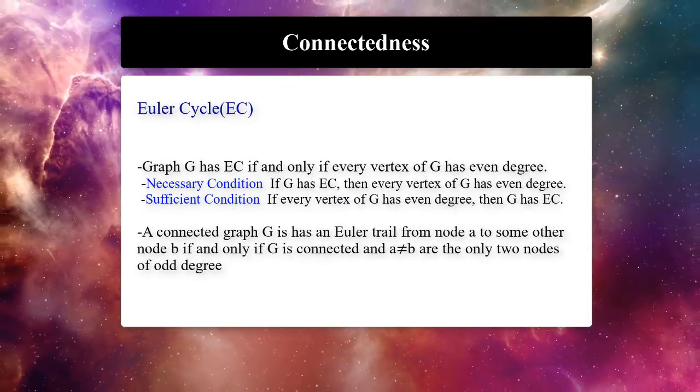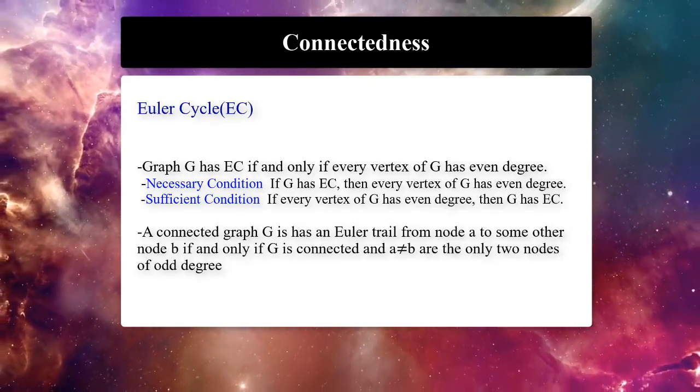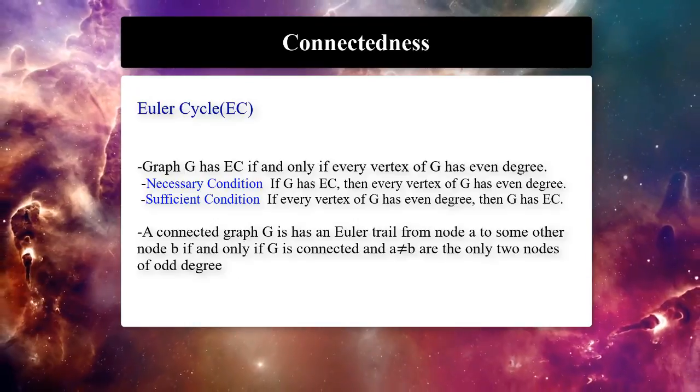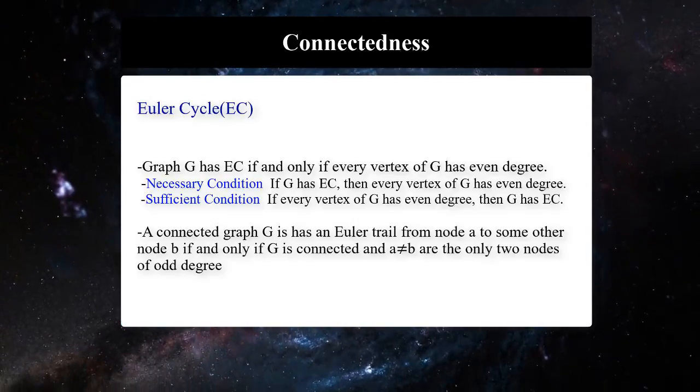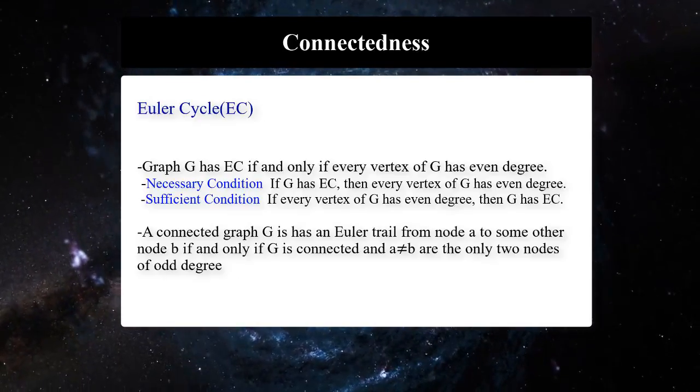We say graph G has Euler cycle if and only if every vertex of G has even degree. A connected graph G has an Euler trail from node a to some other node b if and only if G is connected and a is not equal to b are the only two nodes of odd degree.